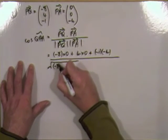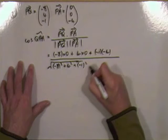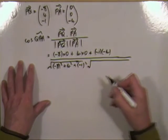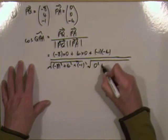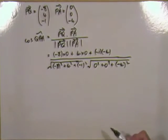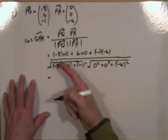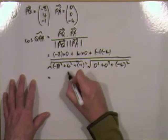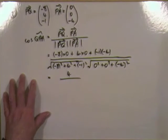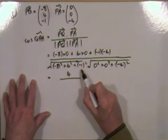So for PQ — negative 8 squared, 4 squared, negative 1 squared — giving 64, 16, and 1, totalling 81. For PA — the scalar product calculation: 0 times negative 8, 0 times 4, and negative 4 times negative 1 gives 4. The top of the fraction comes to 4. For the length of PQ: square root of 81, and for PA: square root of 16, which is 4.